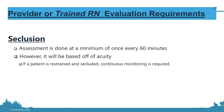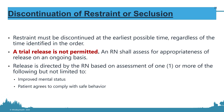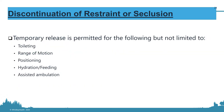If a patient is secluded and restrained simultaneously, continuous monitoring is required. Restraints must be discontinued at the earliest possible time — they are either on or off, there is no trial release. Patients who are improving and complying with behavioral expectations need to have their restraints removed. You can temporarily pause restraints for specified reasons, but this is considered a pause, not a release.